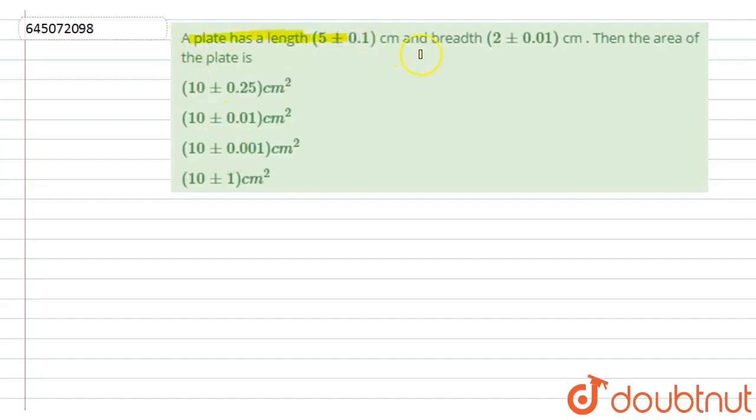A plate has a length of 5 plus minus 0.1 centimeter and breadth of 2 plus minus 0.01 centimeter, then the area of the plate is. So let's see the solution. Actually, in this question we have to find the area of the plate.